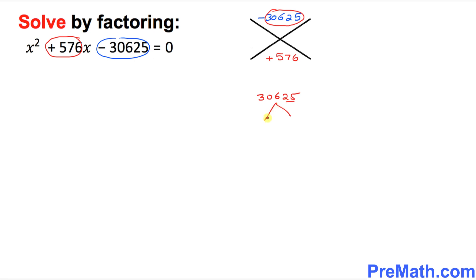So this could be factored out to 25 times 1225. So far so good. Once again, you can see the last two digits are 25, that means I can again factor it out: 25 times 49. So that means this 30625 could be written as 25 times 25 times 49.